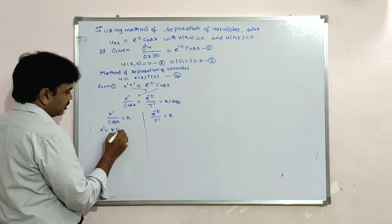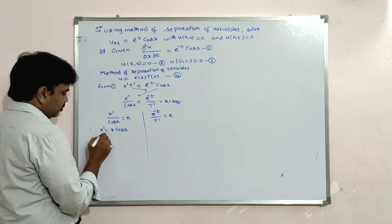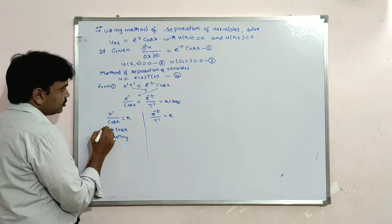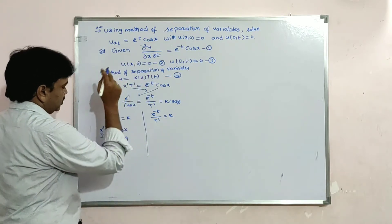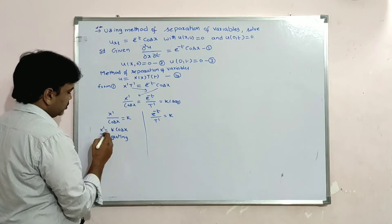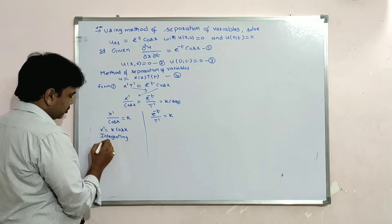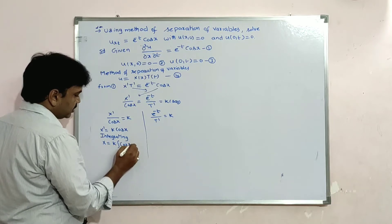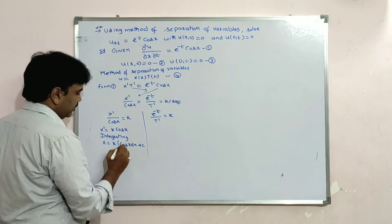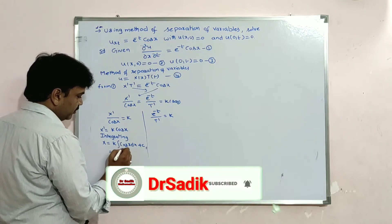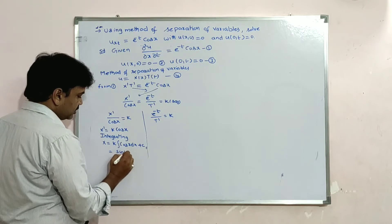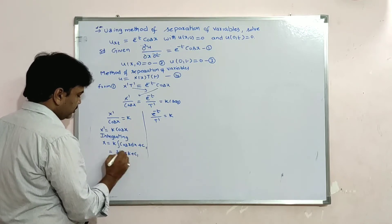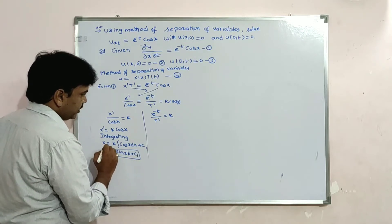Solving the first equation: X' = k·cos(x). Integrating both sides — X' means dX/dx, so integration and derivative cancel — we get X = k·sin(x) + c₁.